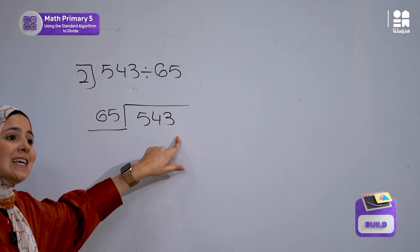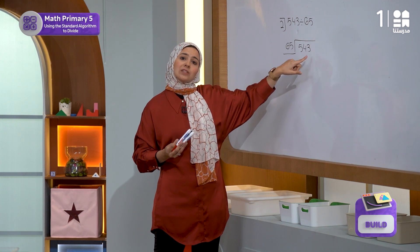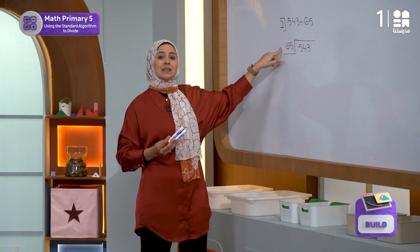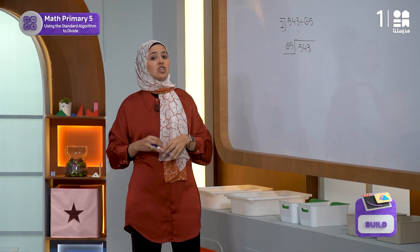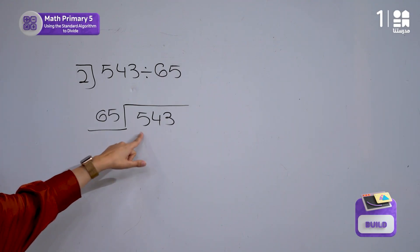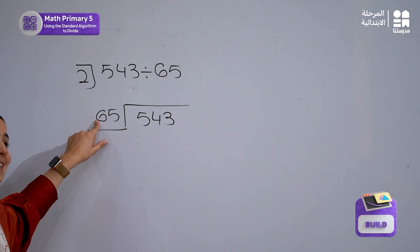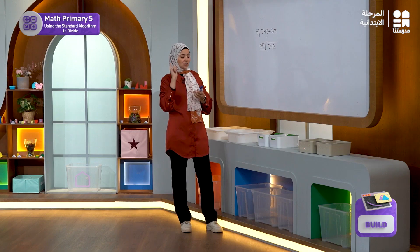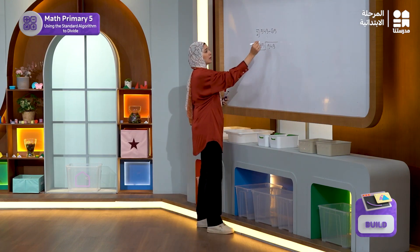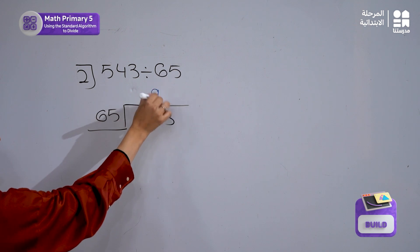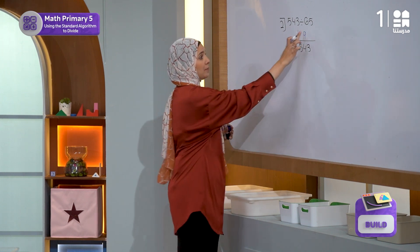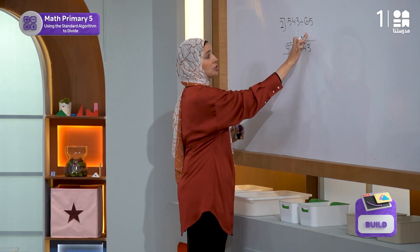Now I will divide 543 by 65. To make the division easier, we will start by dividing 54 by 6, which is equal to 9. Let's check what happens if I write the 9 as the quotient.